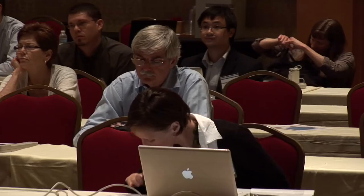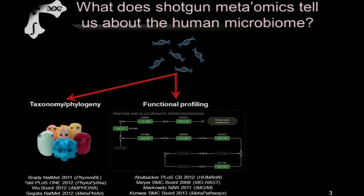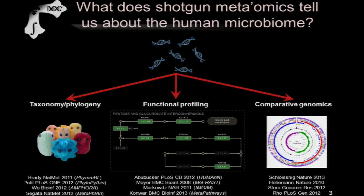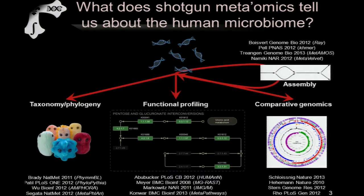There are now robust suites of tools for assessing who's there from shotgun sequencing data and for assessing which genes or pathways are active from shotgun metatranscriptomic data. A third area that's fairly distinct is comparative genomics within microbial communities — within an individual, between body sites, or within communities across many individuals in a human population. All of these approaches can be tackled with or without metagenomic assembly, putting back together large contigs or whole genomes from shotgun sequencing data.